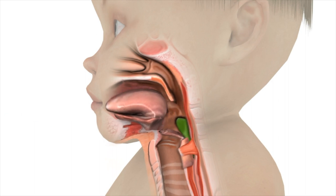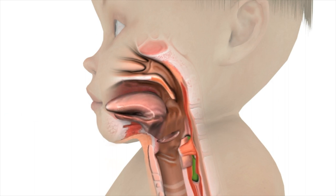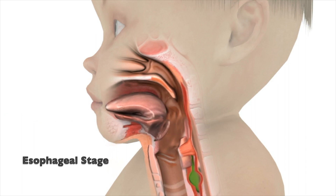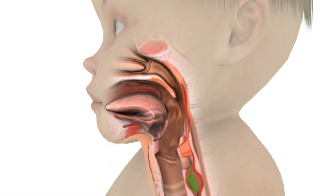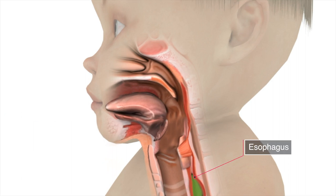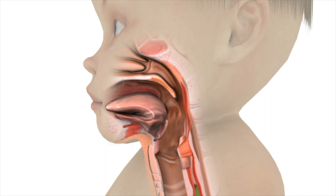Once the bolus passes the cricopharyngeus muscle, the esophageal stage begins. The cricopharyngeus muscle closes back up to prevent any regurgitation back up into the throat. The esophageal muscles continue to propel the bolus into the stomach by a coordinated muscle contraction and relaxation known as peristalsis. The mouth and throat then reset to prepare for the next swallowing event.